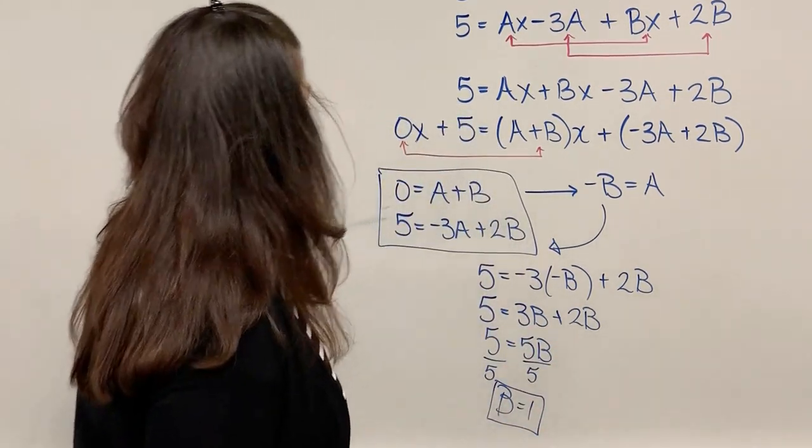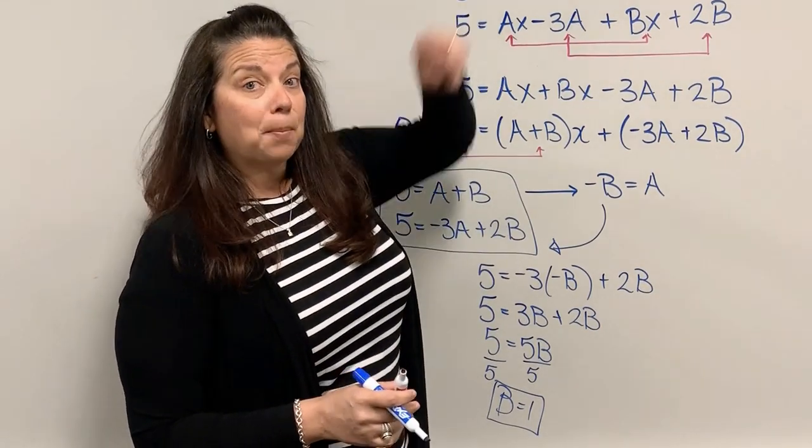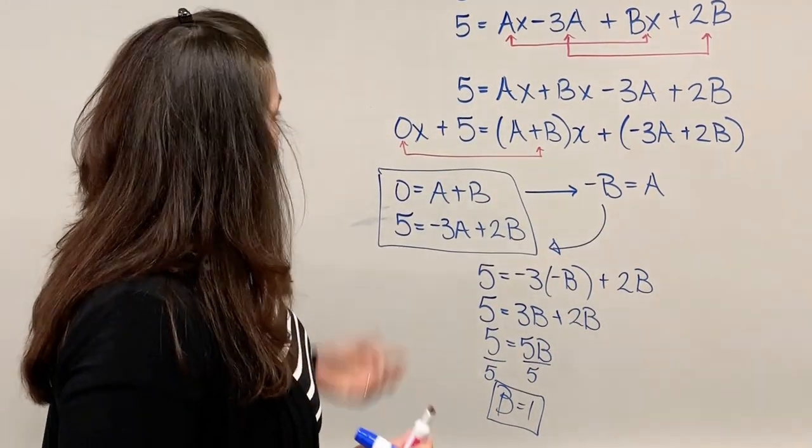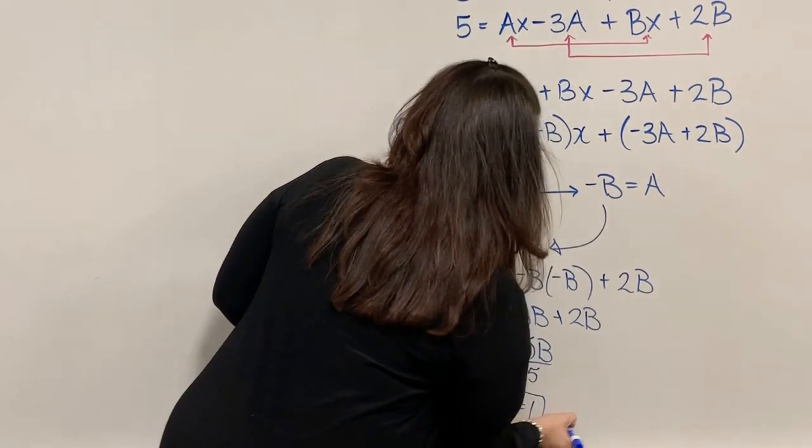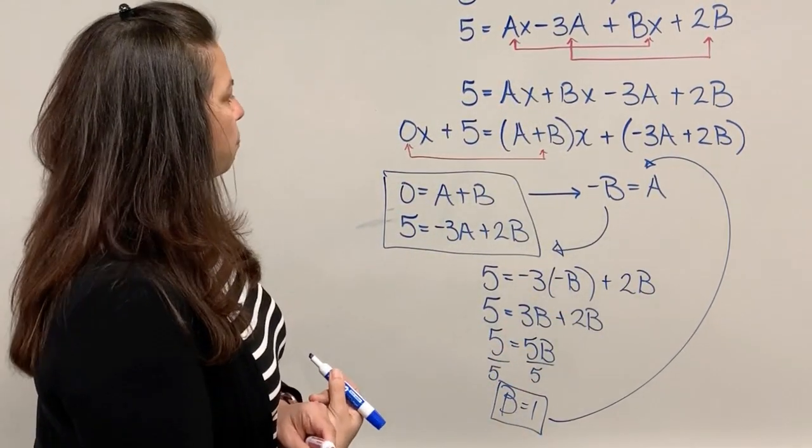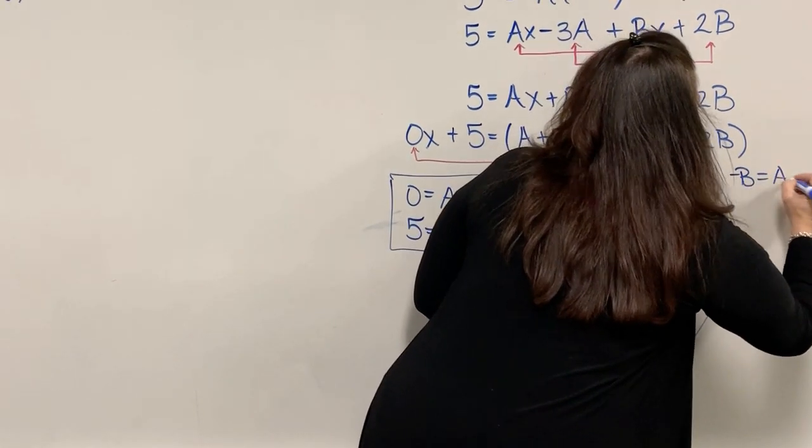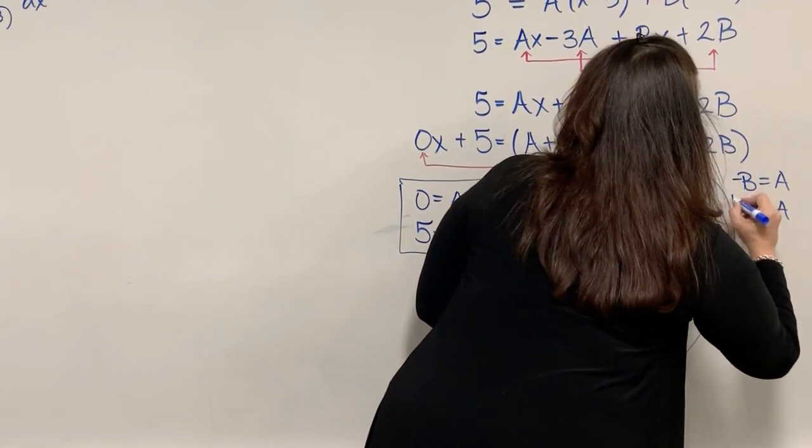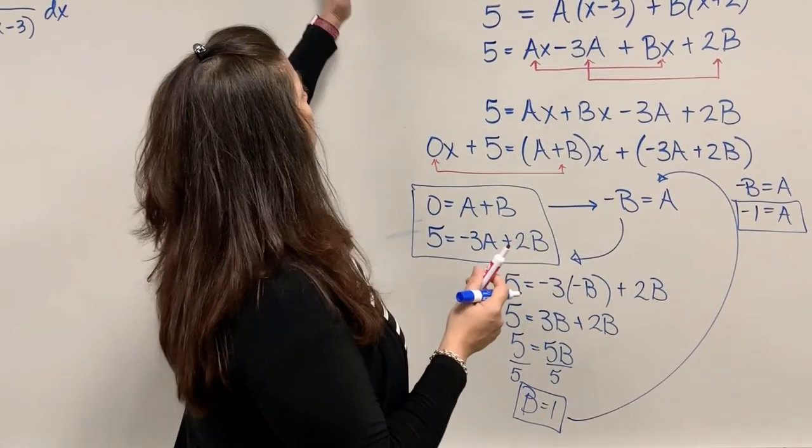That's one of the values for the numerator of my partial fraction that I was decomposing, but I don't know what A is yet. I can come back and plug into this equation, -B = A. Since B is 1, -1 = A. Now I have the second numerator.